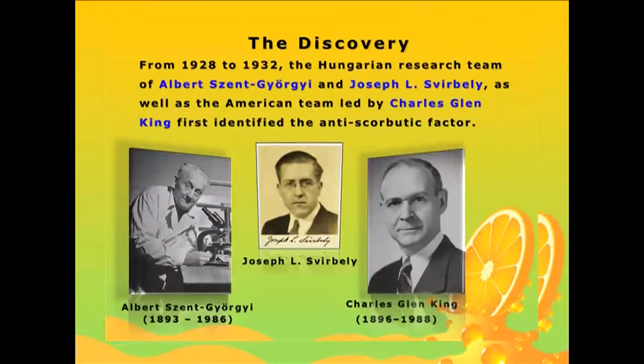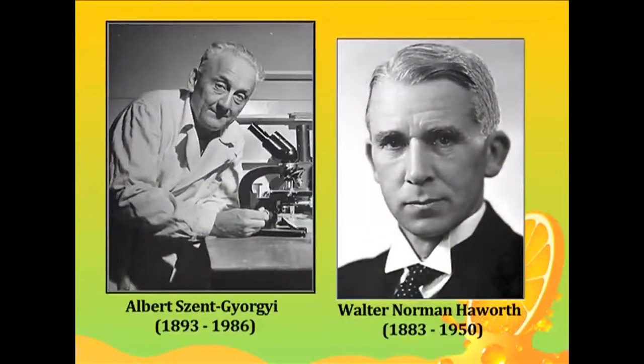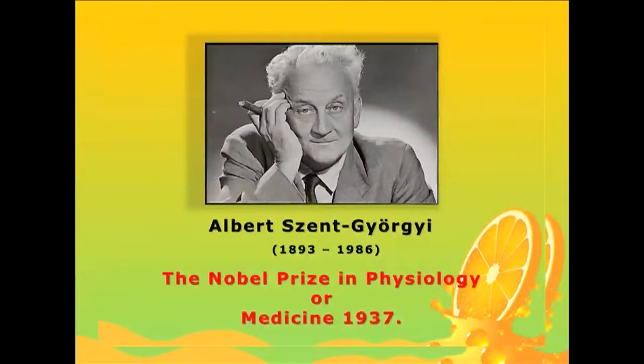Szent-Györgyi had isolated a compound called hexuronic acid from the adrenal glands of animals, and suspected it may have anti-scorbutic activity. He gave some of his compounds to Charles Glenn King, who had an anti-scorbutic assay in guinea pigs ready in his laboratory. Charles Glenn King demonstrated the anti-scorbutic activity of hexuronic acid, but published his work without the knowledge of Szent-Györgyi. In 1933, Szent-Györgyi collaborated with Walter Norman Haworth of England, demonstrated the anti-scorbutic activity of hexuronic acid, chemically synthesized it, and deciphered its structure. For this landmark contribution, Albert Szent-Györgyi was awarded the Nobel Prize in Physiology or Medicine in 1937.